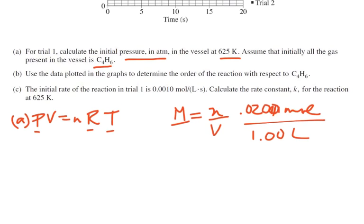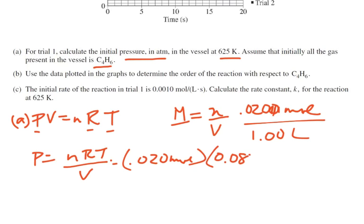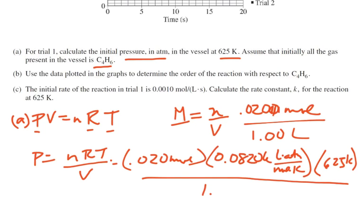So P is equal to nRT over V. The number of moles we're going to say is 0.020 moles. And R we know is 0.08206, and that's liters atmospheres per mole kelvin. And the temperature we said was 625 kelvin. And all of this we're going to say is a 1 liter container.